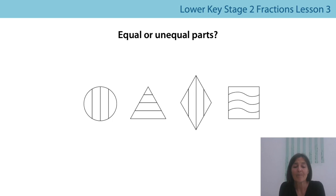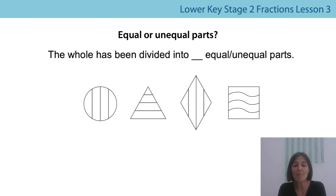So what about these shapes? Has the whole shape been divided into equal or unequal parts? Let's do it together and let's use this sentence. So first of all the circle. The whole has been divided into four unequal parts. And now let's do the triangle. The whole has been divided into four unequal parts. The rhombus. The whole has been divided into four unequal parts. And finally the square. Oh this one's got wavy lines on it for the first time. The whole has been divided into four unequal parts. Well done.